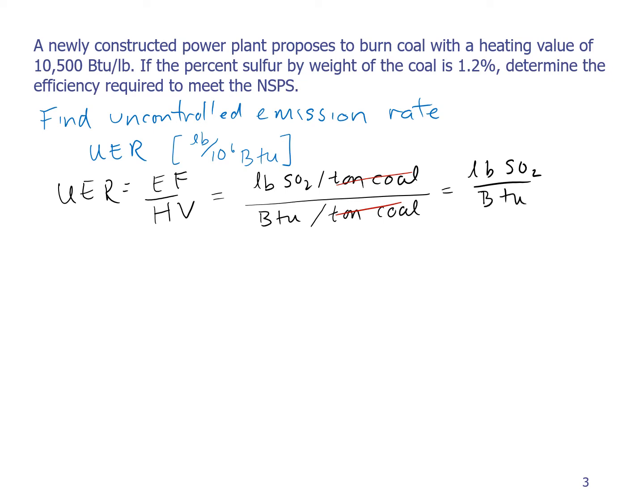So the emission factor here is 39S, as we discussed, and that's 39 times 1.2, and you use 1.2, not 0.012, and that gives me 46.8 pounds of SO2 per ton of coal.